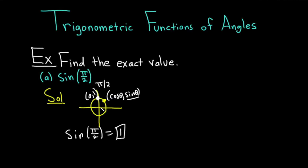So 1 is the answer. The point is, whenever you have an angle that lies on an axis — for example, pi, 3 pi over 2, or 0, which leads to the same trig function values as 2 pi and 4 pi, etc. — you want to think about the unit circle because you can easily find the sine and cosine of those angles. Let's go ahead and do another example.